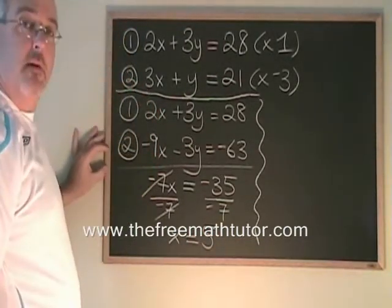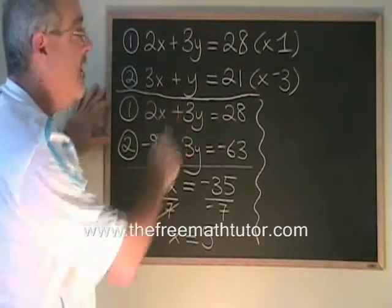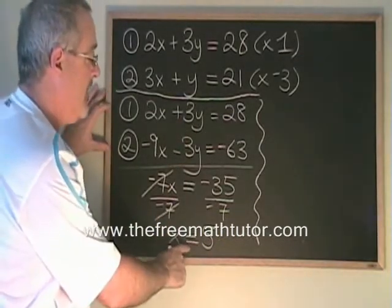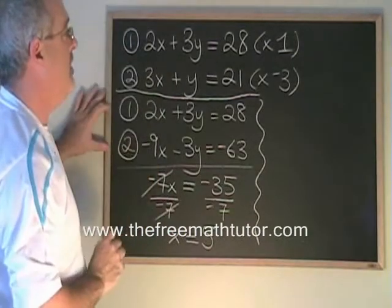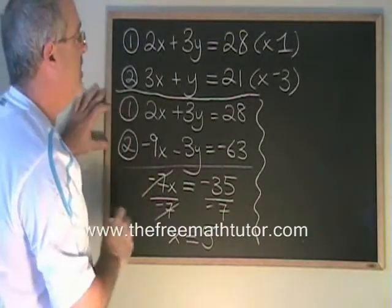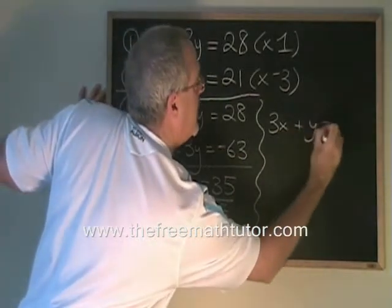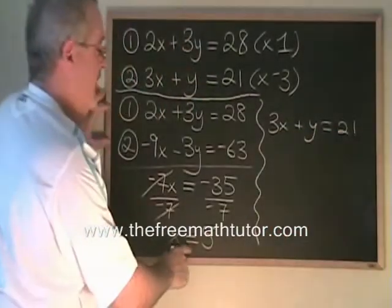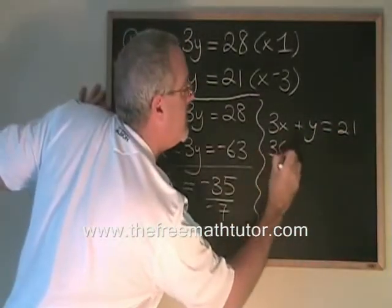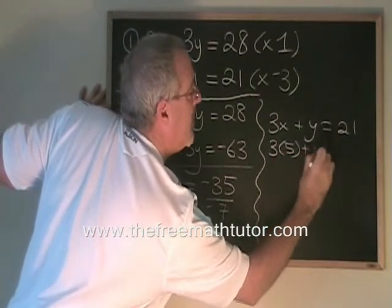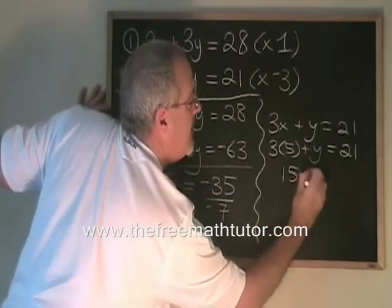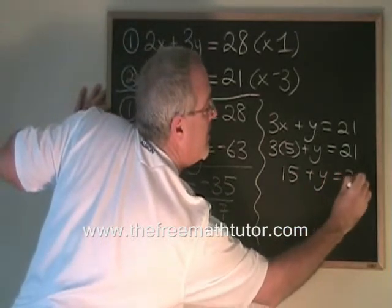Now, to find the y in our point of intersection, we just have to plug x equals 5 into one of the original equations. I'm going to use equation 2: 3x plus y equals 21. If x equals 5, 3 times 5 plus y equals 21. 15 plus y equals 21.